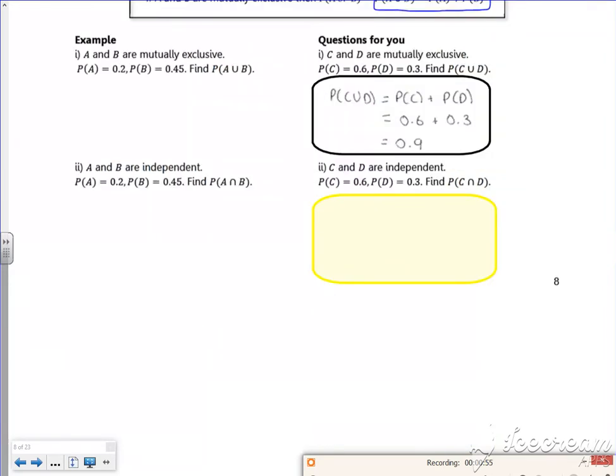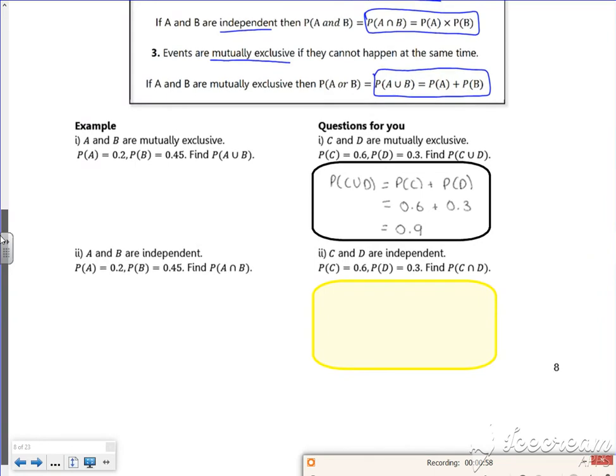So it tells you that A or B are mutually exclusive. So if they're mutually exclusive, we can just add them together. So the probability of A or B is 0.2 plus 0.45, which is 0.65. There's one for you.